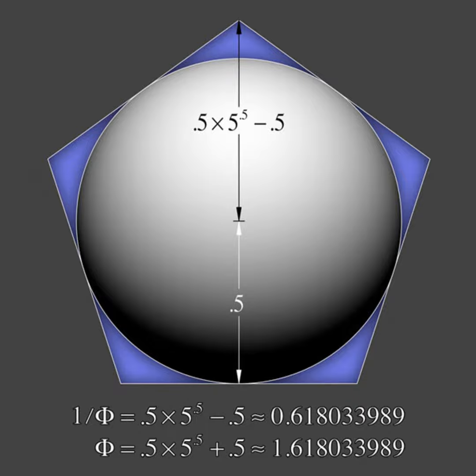It's got to do with a pentagon being drawn around a circle. If you look at the circle, it has a radius of 0.5 or a diameter of one, and the pentagon is circumscribed about the circle.